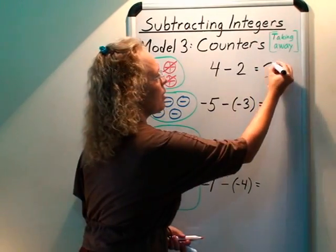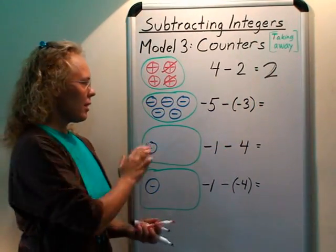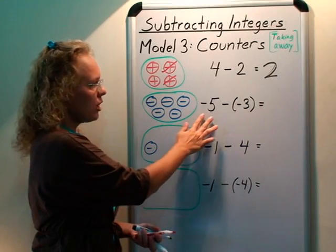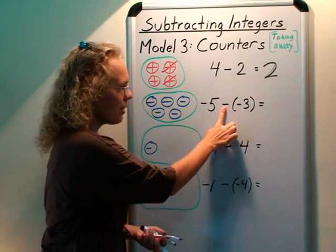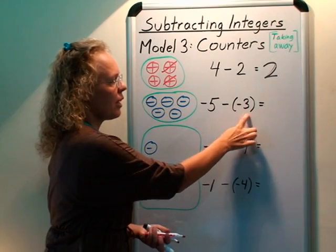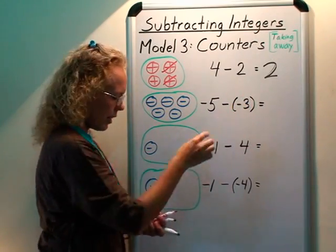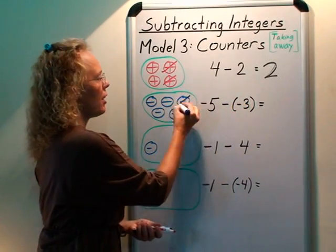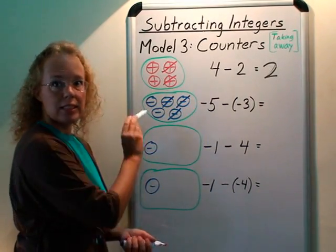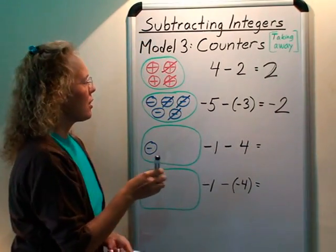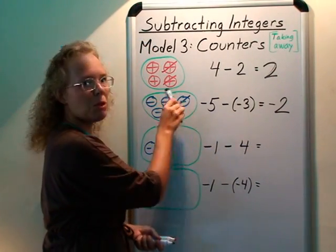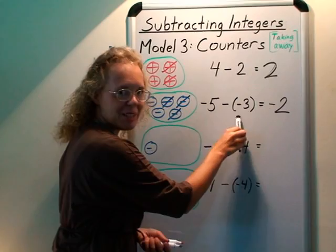And now we can look at it with negative counters. If initially you have negative 5, and then this minus here means take away, and then this means take away negative 3. So you cross out negative 3. And what is left is negative 2. It is easy to see in this situation. This counter model works really well for this particular example.